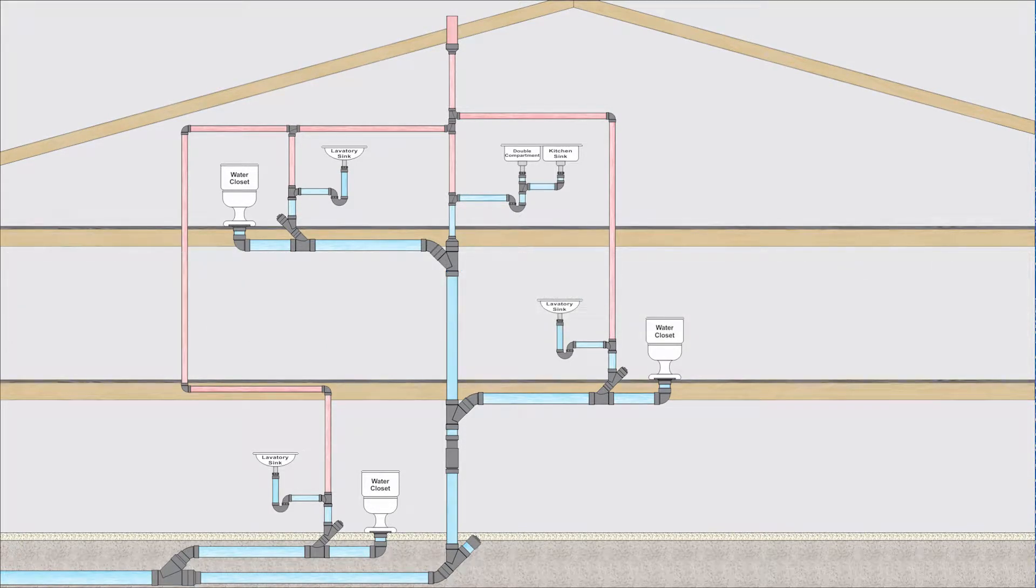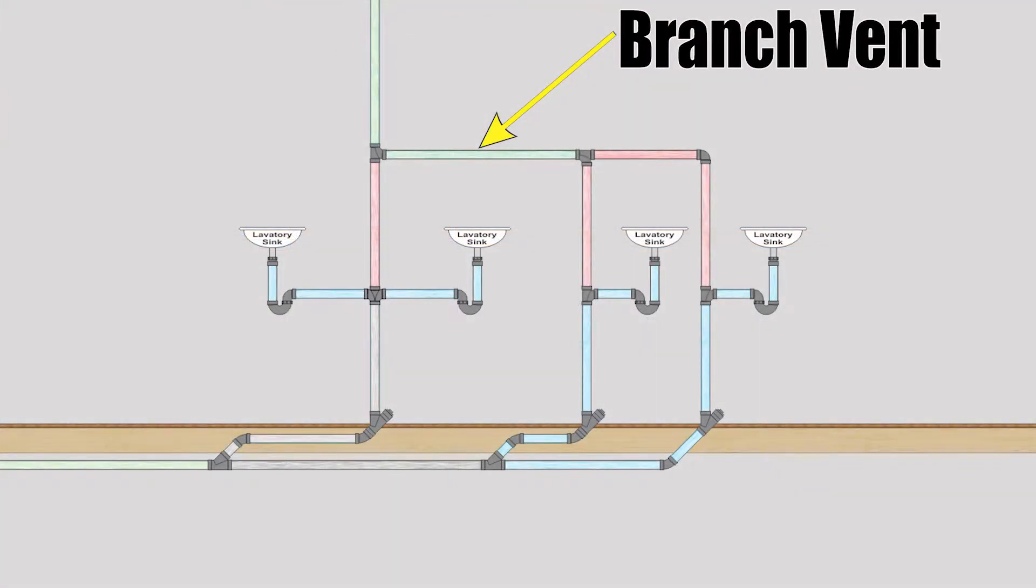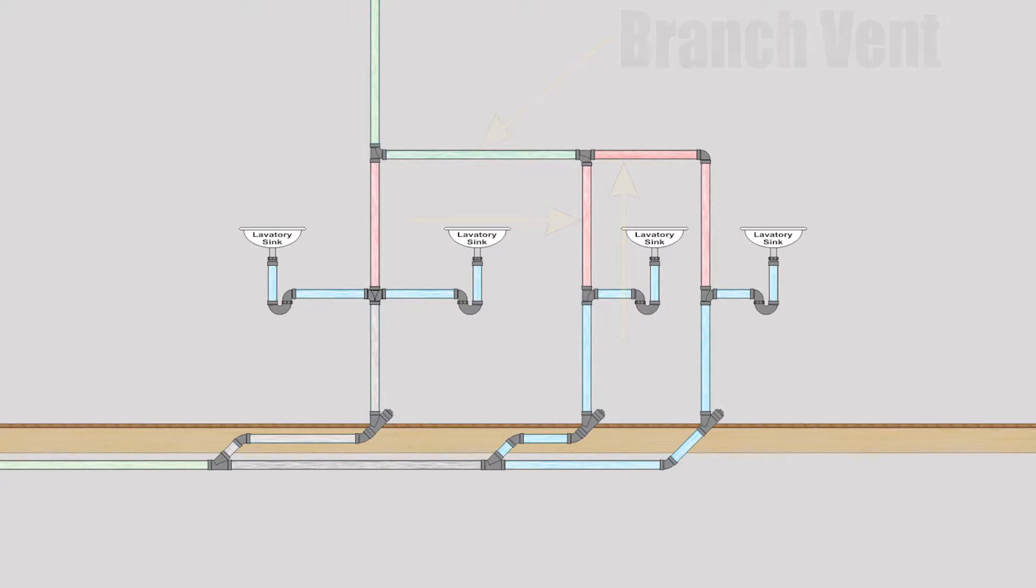Now, this definition says many things but it really doesn't get to the fine nuance of what's going on here, so let me break this down for you. The branch vent is the resulting vent when any two minor vents join together. Now, the minor vent is not actually a real thing; it's a classification I like to make just to simplify things.